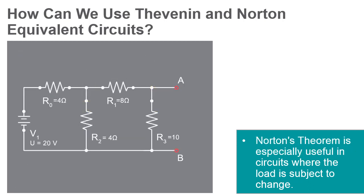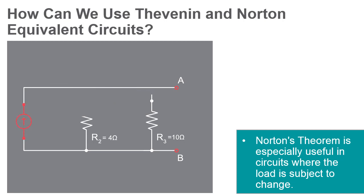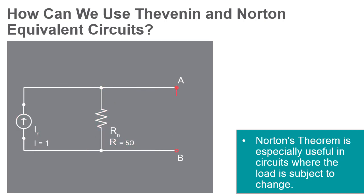The same advantages also apply to Norton's Theorem. If we wish to analyze load resistor voltage and current over several different values of load resistance, we can use the Norton equivalent circuit again and again, applying nothing more complex than a simple parallel circuit analysis to determine what's happening with each trial load.